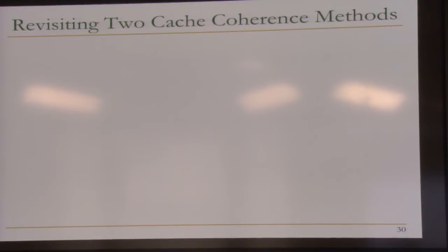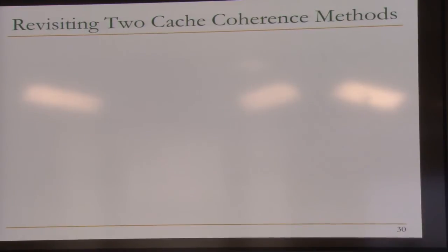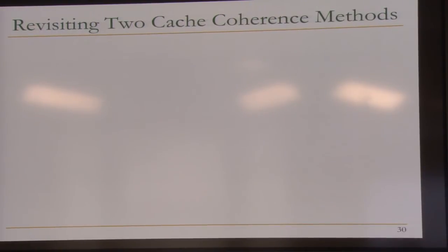Which is a simpler concept — coherence or consistency? Coherence is simpler to reason about because it's about a single cache block, whereas consistency is about multiple memory locations and their ordering. Fundamentally, consistency is more difficult.